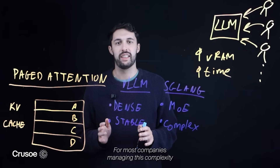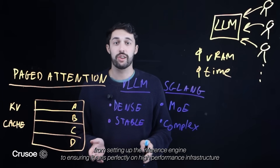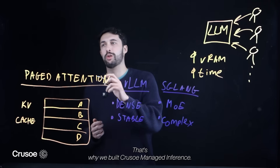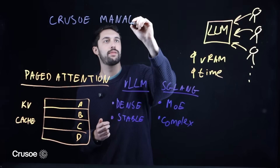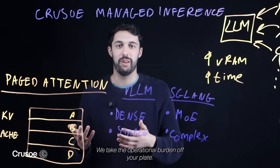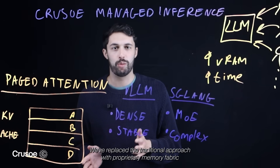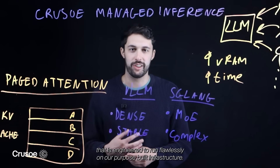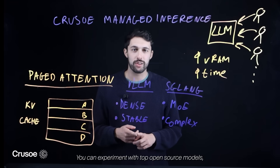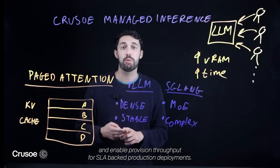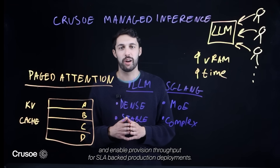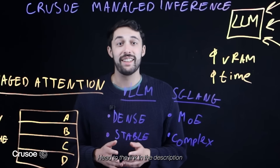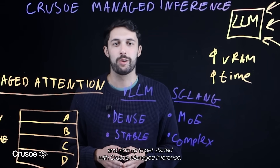For most companies, managing this complexity — from setting up the inference engine to ensuring it runs perfectly on high-performance infrastructure — is a huge time and operational burden. That's why we built Crusoe Managed Inference. We take the operational burden off your plate. We've replaced the traditional approach with proprietary memory fabric and a cluster-wide KV cache that is engineered to run flawlessly on our purpose-built infrastructure. You can experiment with top open-source models, generate API keys, monitor performance, and enable provisioned throughput for SLA-backed production deployments. We handle the infrastructure, optimization, and scaling so that you can focus on building your product. Head to the link in the description and sign up to get started with Crusoe Managed Inference.